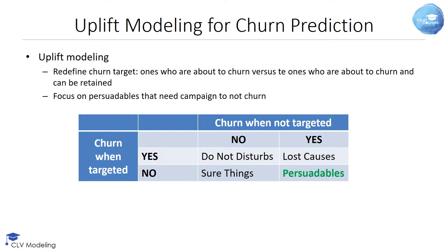Uplift modeling provides an interesting alternative to churn prediction modeling and setting up well-targeted marketing campaigns. It reformulates the target variable from the ones who are about to churn to the ones who are about to churn and can be retained with a marketing campaign. In other words, we want our analytical model to focus on the persuadables that need the campaign to not churn.